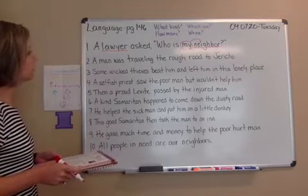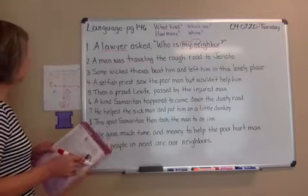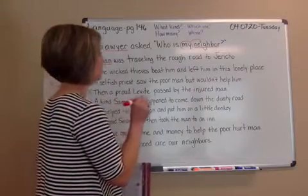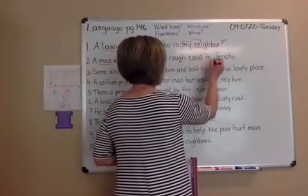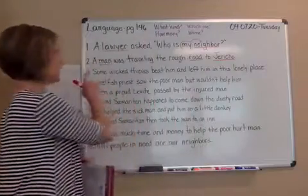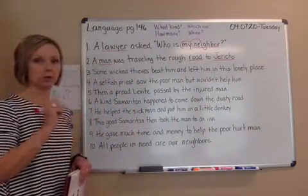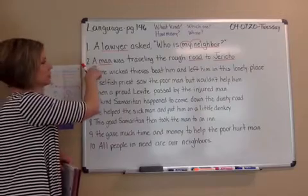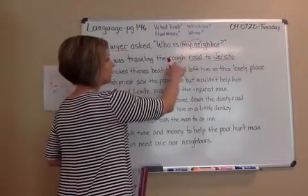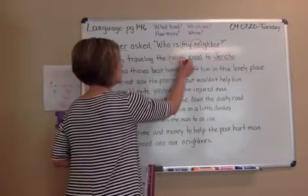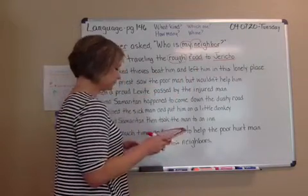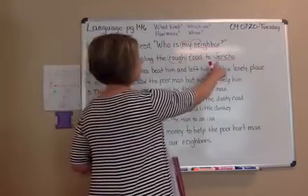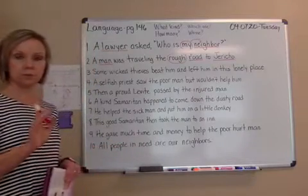Number two: a man was traveling the rough road to Jericho. Find the nouns: man, road, and Jericho. Now pick up adjectives. For road, does rough describe road? Yes — circle it and match it. Not 'the' for now. Is Jericho an adjective? No — so we're finished with number two.